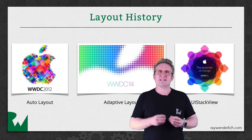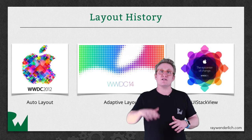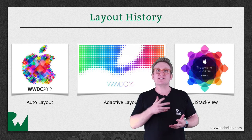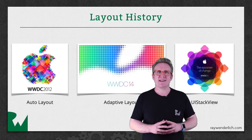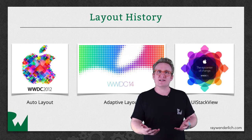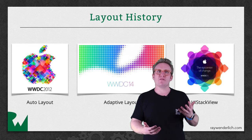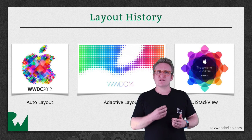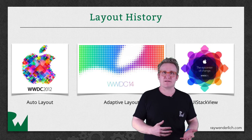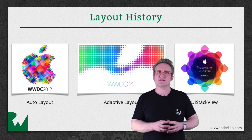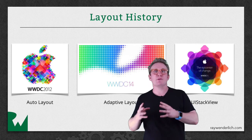2014 saw the introduction of Adaptive Layout, a layer that sits on top of Auto Layout and allows for universal layout — that is to say, layouts that adapt to different screen sizes. Although 2015 also introduced a new layout feature in the form of UI Stack View, it's not required, but rather an abstraction of an often-used layout to massively simplify the process of translating your designs into actual app layouts.